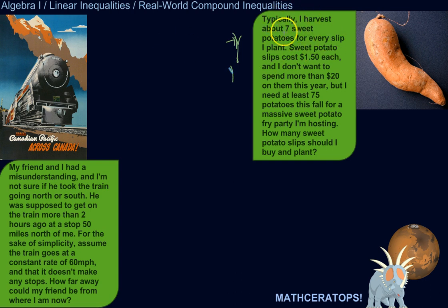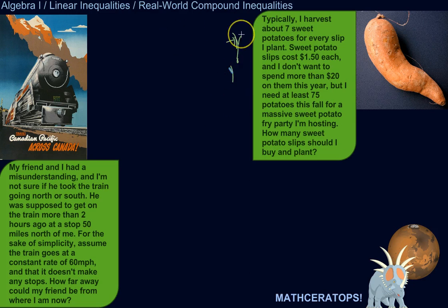Typically I harvest about seven sweet potatoes for every slip I plant. So I plant these little guys and let's say I get seven sweet potatoes for each one that I plant. It's not going to work out exactly like that, but we're simplifying things.